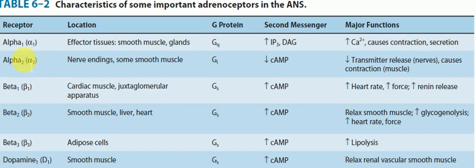Now, what happens when the neurotransmitter acts on alpha 2 adrenoreceptors? Alpha 2 is located on the nerve endings and some smooth muscles. The effect on alpha 2 adrenoreceptors leads to the activation of the G protein called GI. GI — the 'I' stands for inhibitor — meaning the activation of this pathway leads to an inhibitory action.